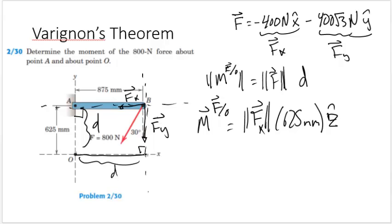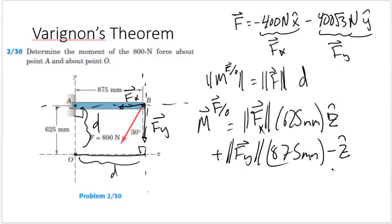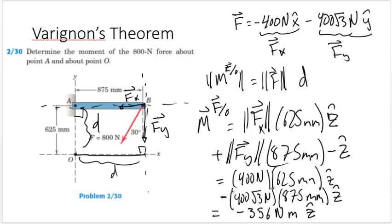Next, we will account for the moment about O from the Y component of the force. So we have plus the magnitude of the Y component of the force times its perpendicular component, which is 875 millimeters. Using the right hand rule, if you extend your right fingers along the X axis and curl them down, you get your thumb pointing into the page or in the negative Z hat direction. An important thing to note here is when I filled this out, I took the magnitude of the force components, which is just the positive parts of the forces. The sign will be determined by the right hand rule, giving me negative 356 newton meters.